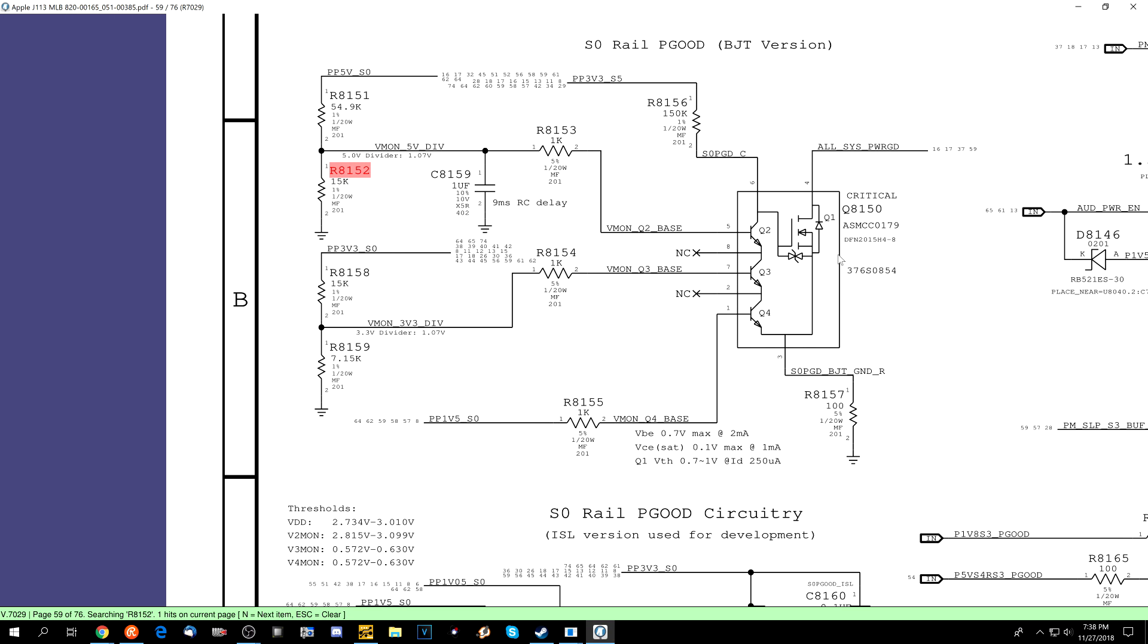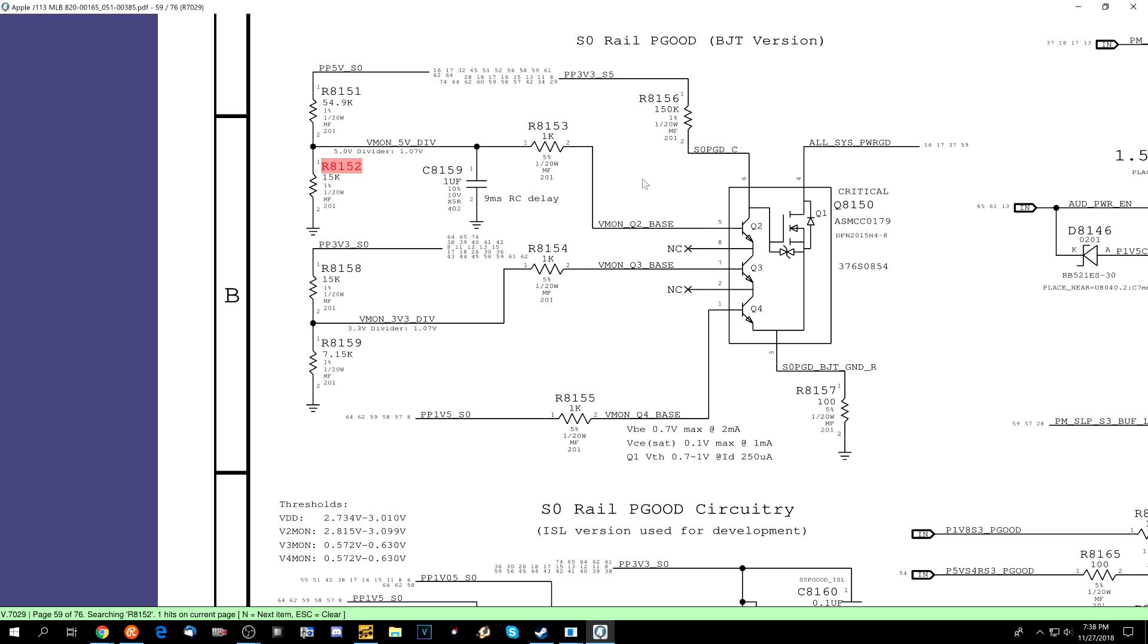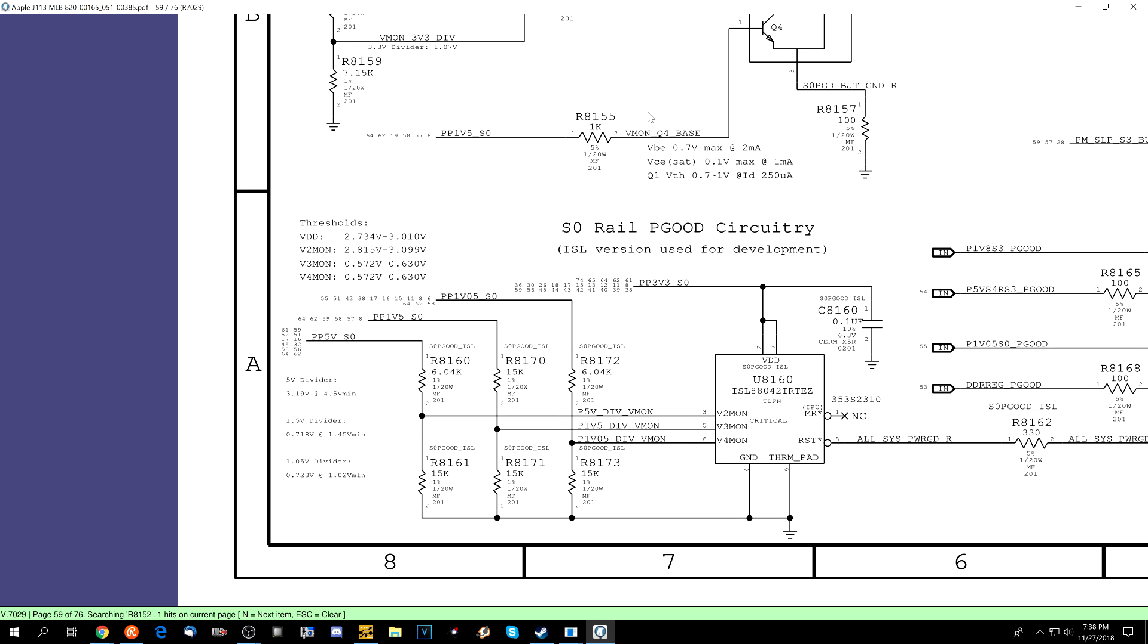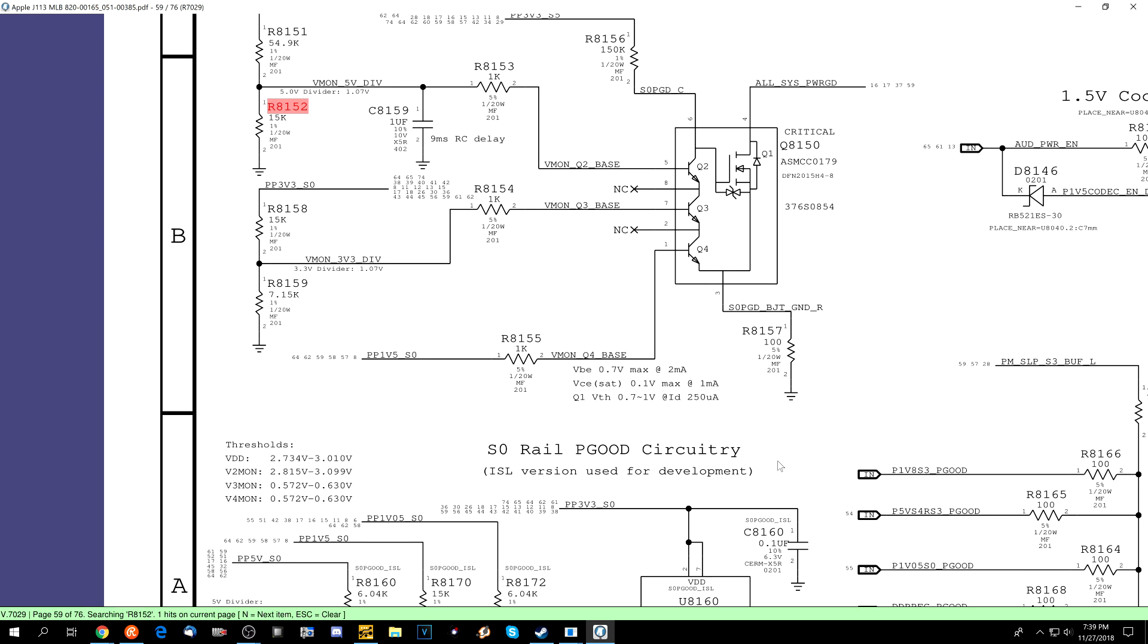Now, you also do keep in mind that this stuff, see where it says ISL version used for development, this is where the circuit gets a little confusing, especially on the airs. This entire setup is not actually here. So this exists. This pull up resistor that takes PM sleep S3L, which is required to be in an SO state, and pulls up all sys power good, that's present. These resistors that sit between these power good signals coming from all the chips that create those rails, and all sys power good, that's present. This transistor over here, along with these voltage dividers that send voltage to the transistor, this is present. This stuff over here is not present.